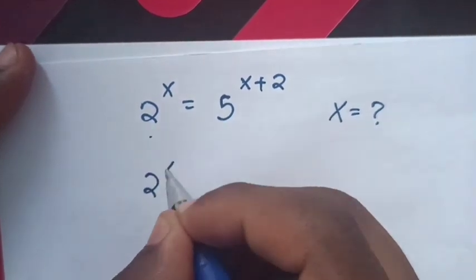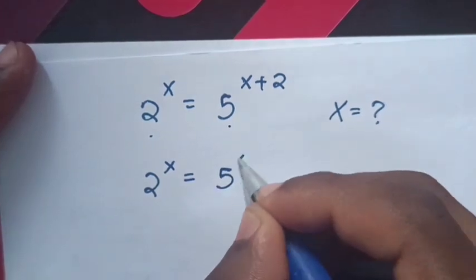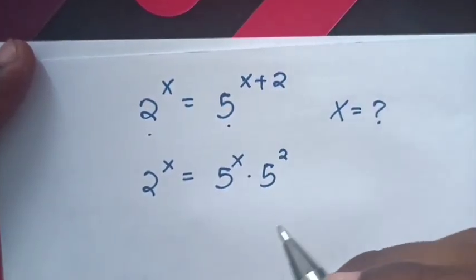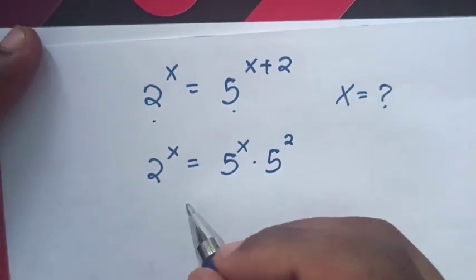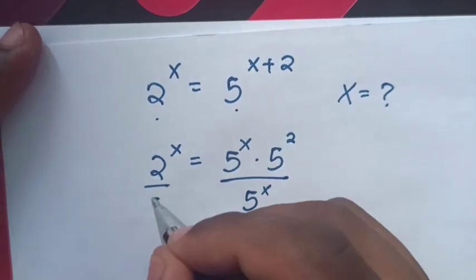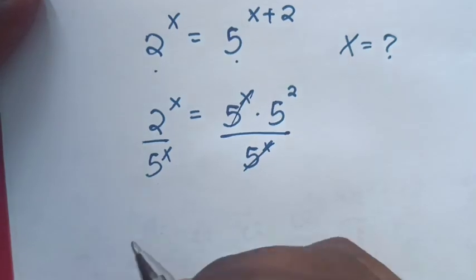2 power x is equal to 5 power x times 5 power 2. Now we divide by 5 power x on both sides. Then 5 power x and 5 power x will cancel.